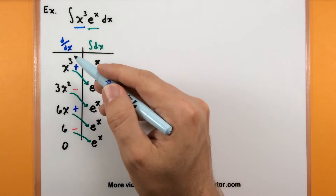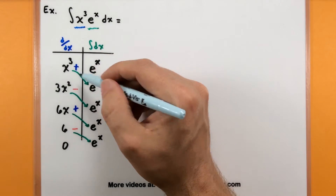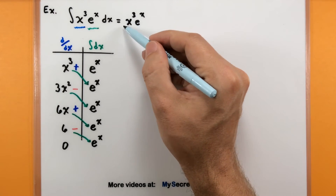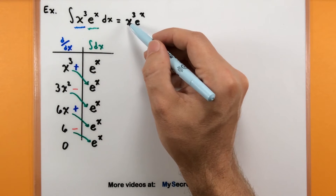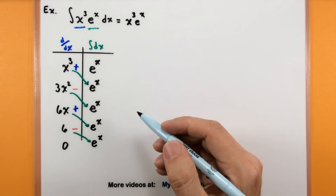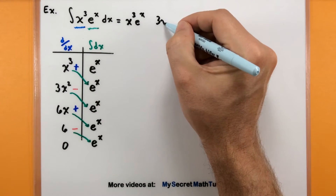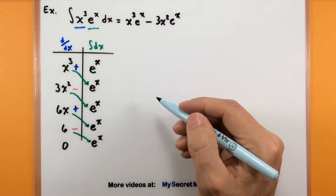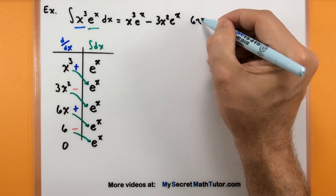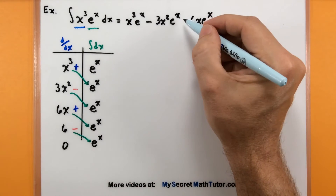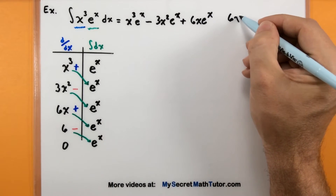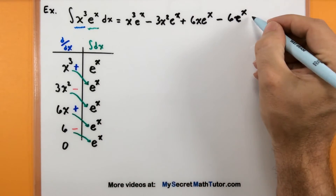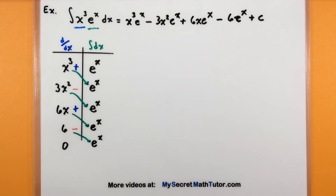Now it's time to write down our answer. We take our connected pieces and write them down with the corresponding sign. So we have x cubed times e to the x, minus 3x squared times e to the x, plus 6x times e to the x, minus 6 times e to the x, plus c. And we're done.